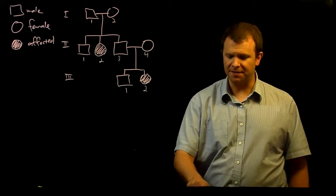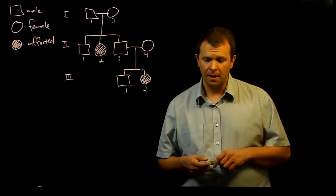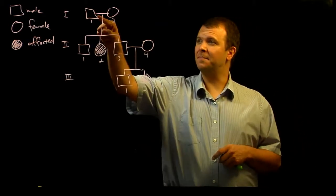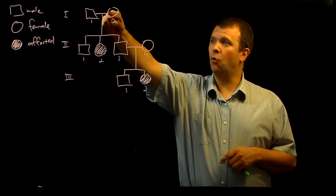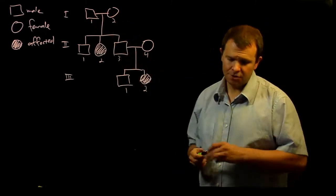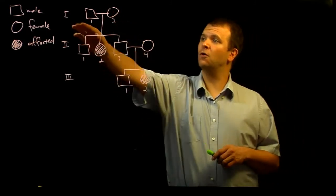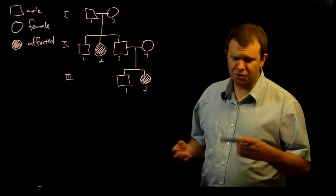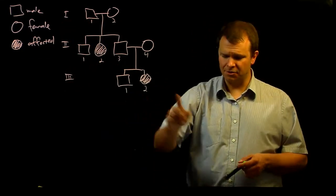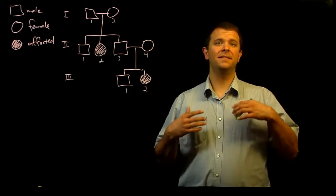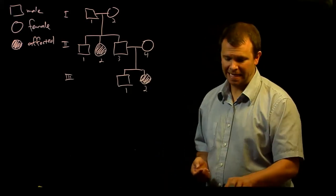So consider, for example, this pedigree right here. A mating is written down as a horizontal line between two symbols, and we use the Roman numerals to indicate generation and the Arabic numerals to represent the siblings or the individuals within a generation.